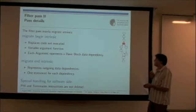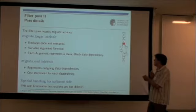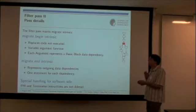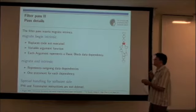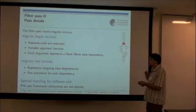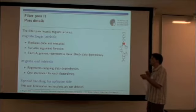The filter path uses the information from the binning path. It creates migrate begin and migrate end intrinsics.